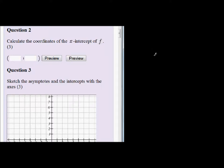Question 2: Calculate the coordinates of the x-intercept of f. Again, the same thing applies. The x-intercept is where y equals 0, so we're going to make y equal to 0.